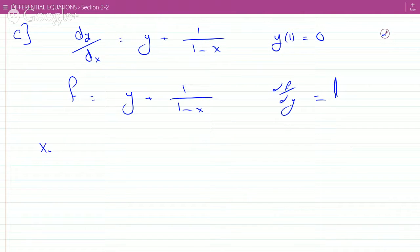So, our initial point is x_0 equals 1 and y_0 equals 0. Is f continuous there? No. Because, you know, x=1 would blow this off.